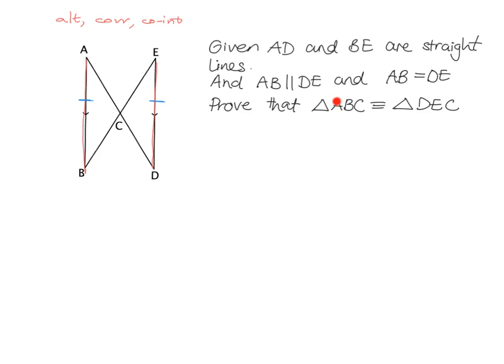When they write the triangles in order like that, it gives us clues. It's likely that angle A equals angle D, angle B equals angle E, and line AB equals line DE. Likewise, BC should equal EC. These are just clues, not facts we can take for granted — but they help us identify which two angles we might try to show are equal.